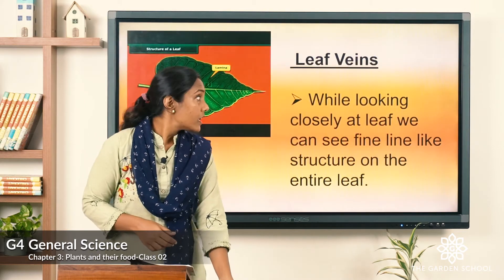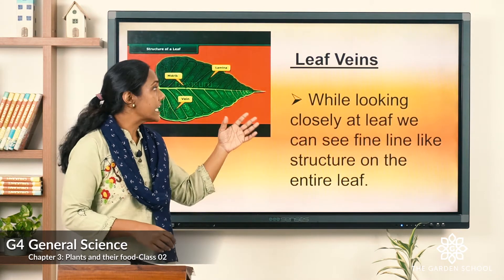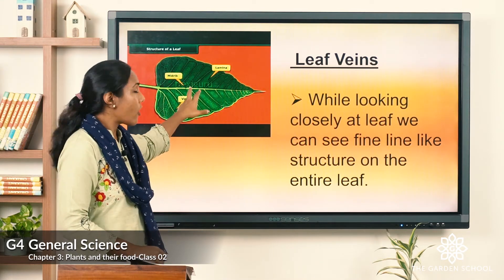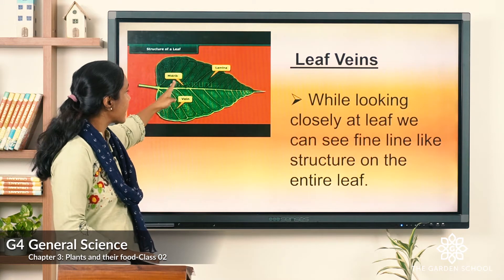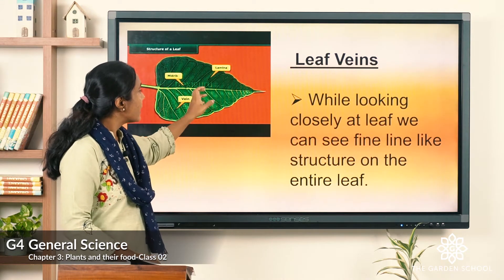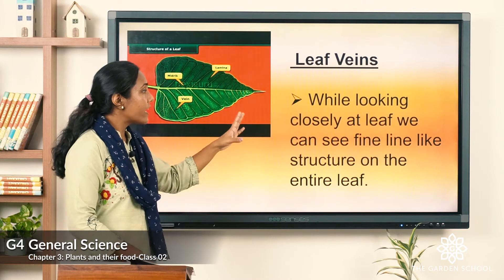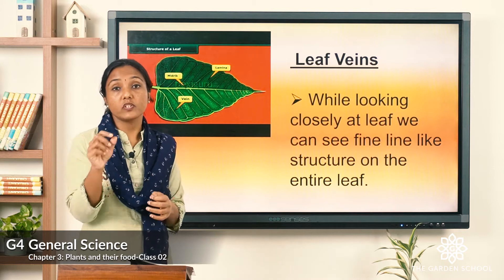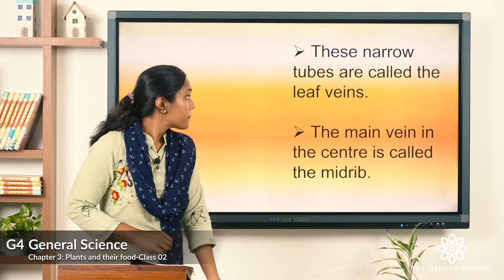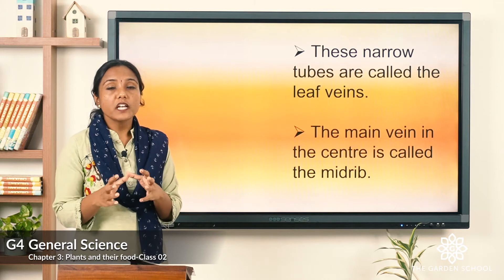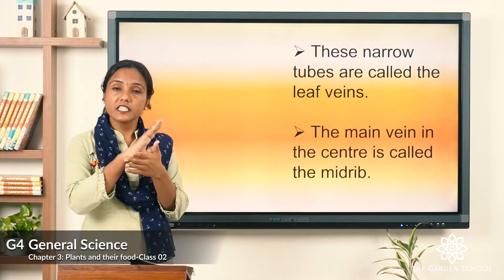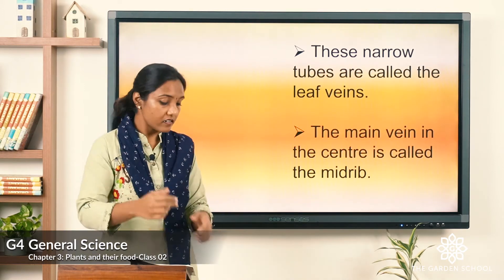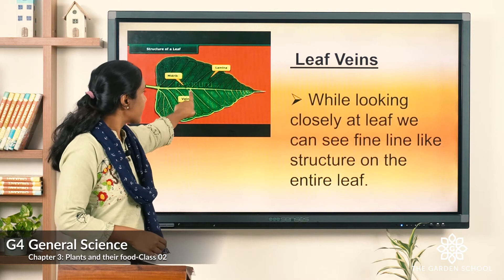Now let us look at leaf veins. You can see on the screen that a leaf has many veins inside. Looking closely at a leaf, we can see fine line structures called leaf veins. These narrow tubes are called leaf veins and are seen on the surface of the leaf. The main vein in the center is called the midrib.